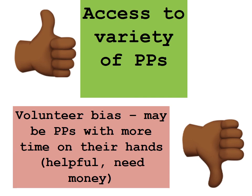People that come forward for our experiment may have more time on their hands, may be more helpful, or may need money. If you only advertise in a certain type of newspaper — for example, the Sun — you may only get a selection of volunteers who are quite similar because they read a similar newspaper. That is the problem with volunteer bias.